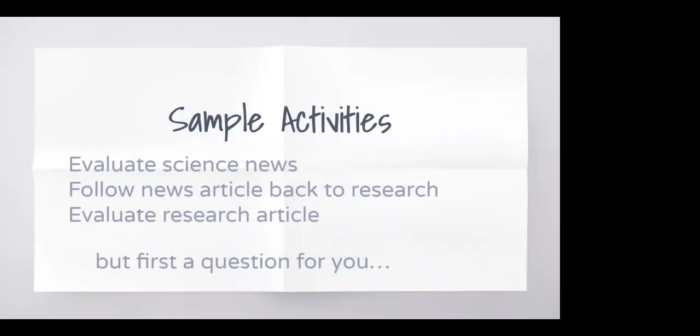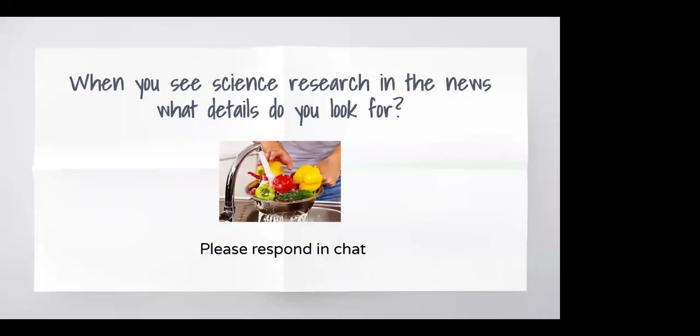Sample activities — and I say this as a plural — are: evaluate science news, follow a news article back to research, and evaluate the research article. But first I want to open it up to the group with a question: when you see a news article that has some research, what details do you look for? Say you see an article on the healthiest way to wash fruits and vegetables when you get them home — what kind of information do you look for in that news report?